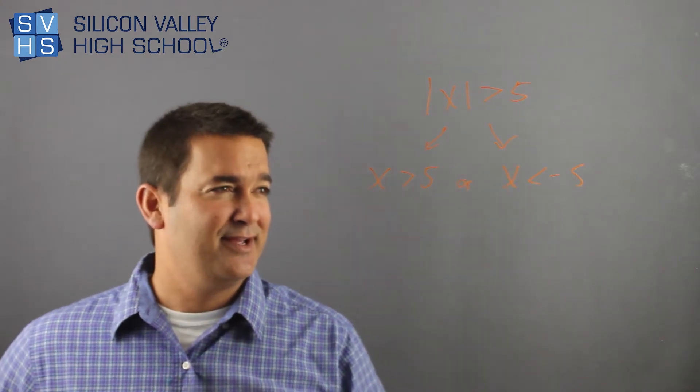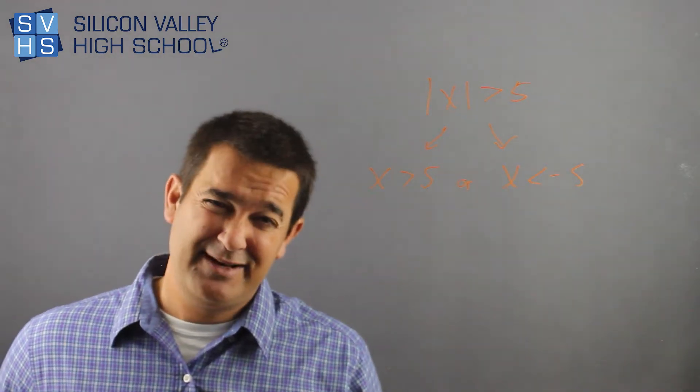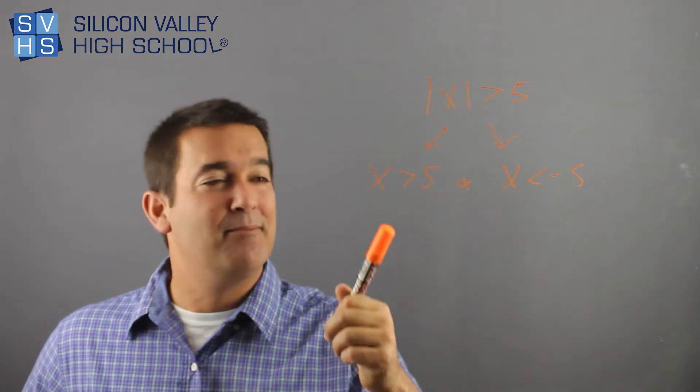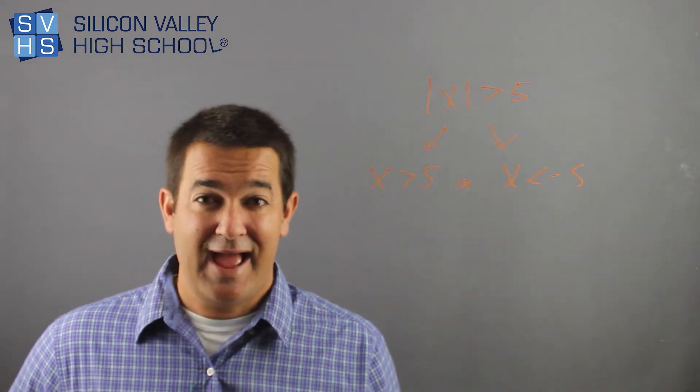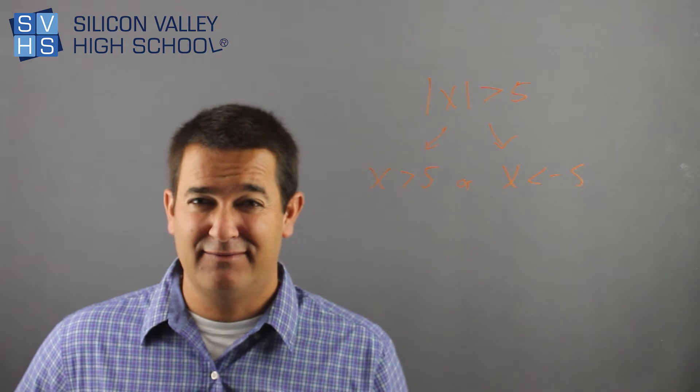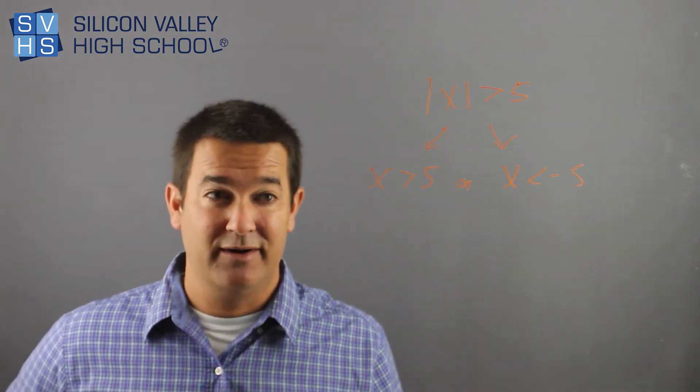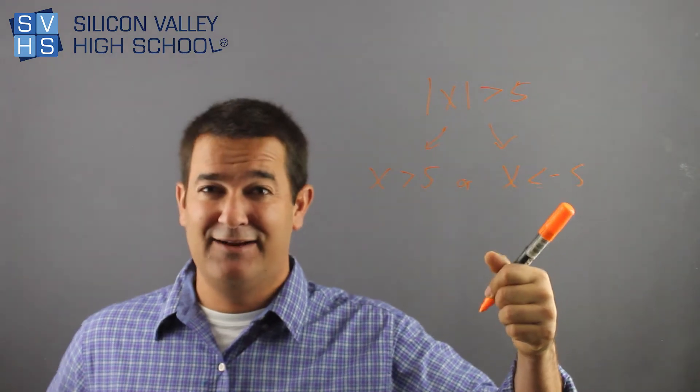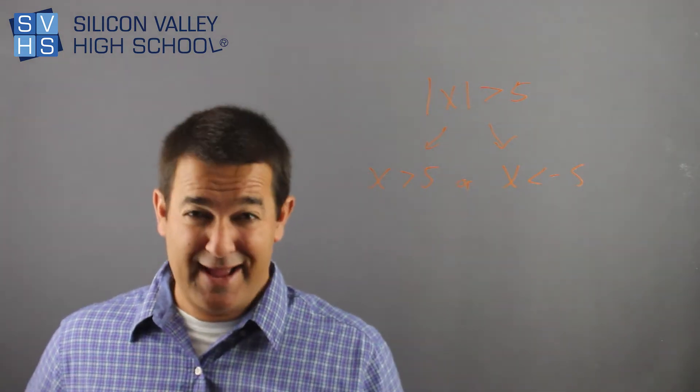I'm sure you've memorized all my videos at this point. But this is an OR problem because you can't have a number that is bigger than 5 and less than negative 5. Like, give me an example. There's not one. Okay, 10 is bigger than 5. Is it also less than negative 5? No. So this is an OR, not an AND problem.